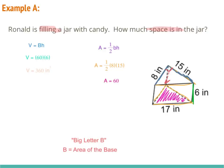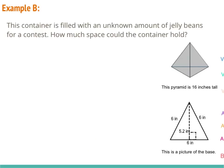Let's go ahead and try example B. This container is filled with an unknown amount of jelly beans for a contest — how much space could the container hold? We're talking about volume again because they're asking how much is inside. The next thing we need to determine is the shape, and since all the sides come to a point at the top, that tells us we're talking about a pyramid.